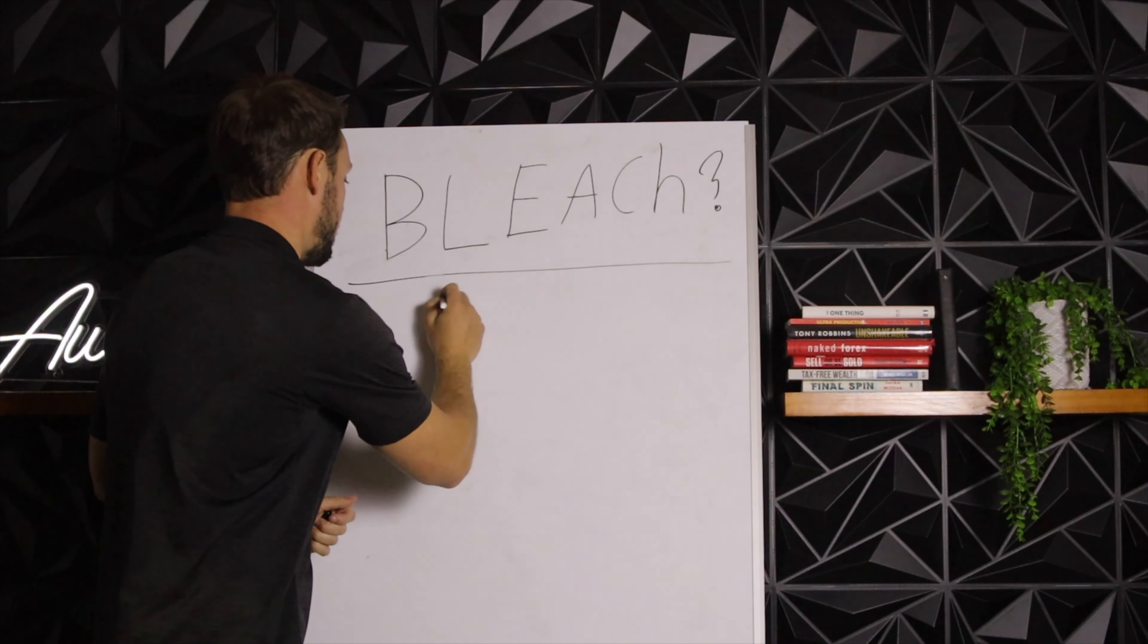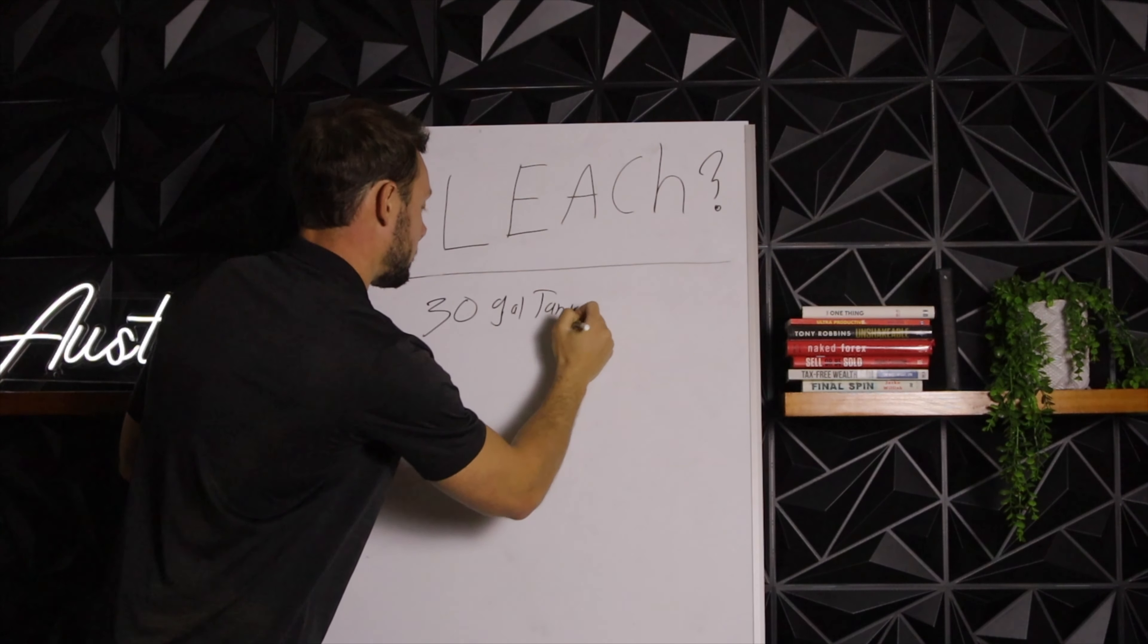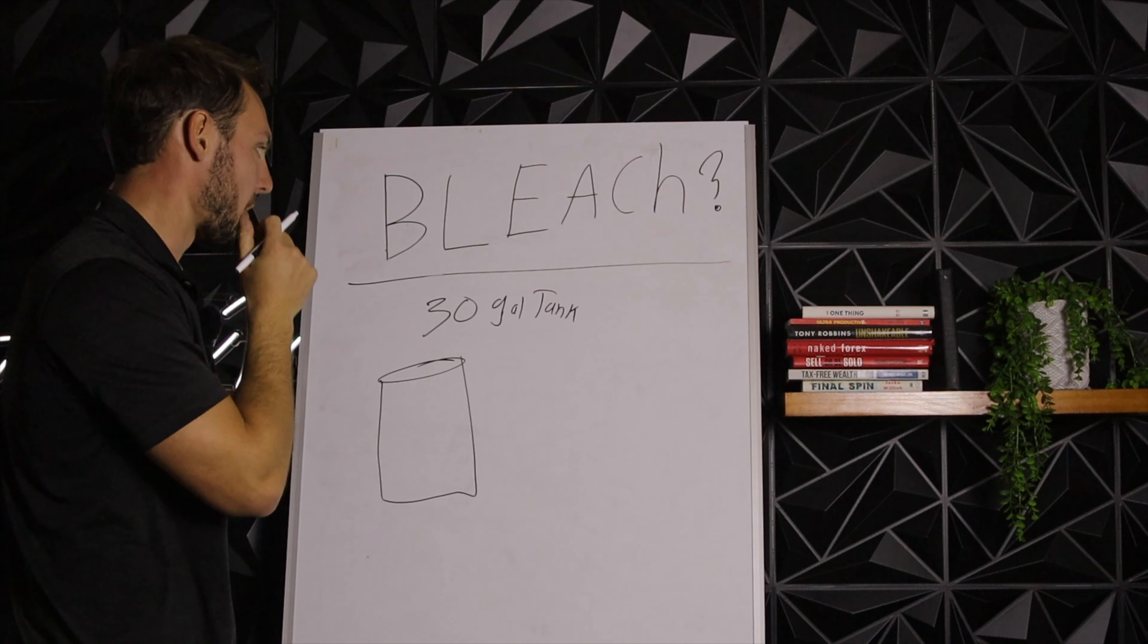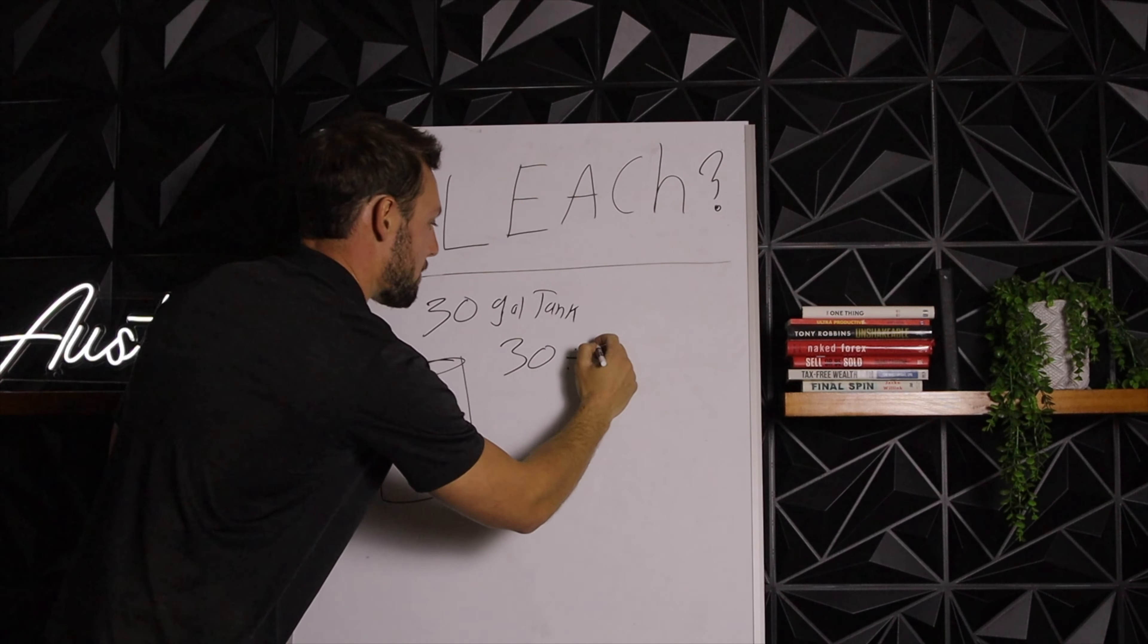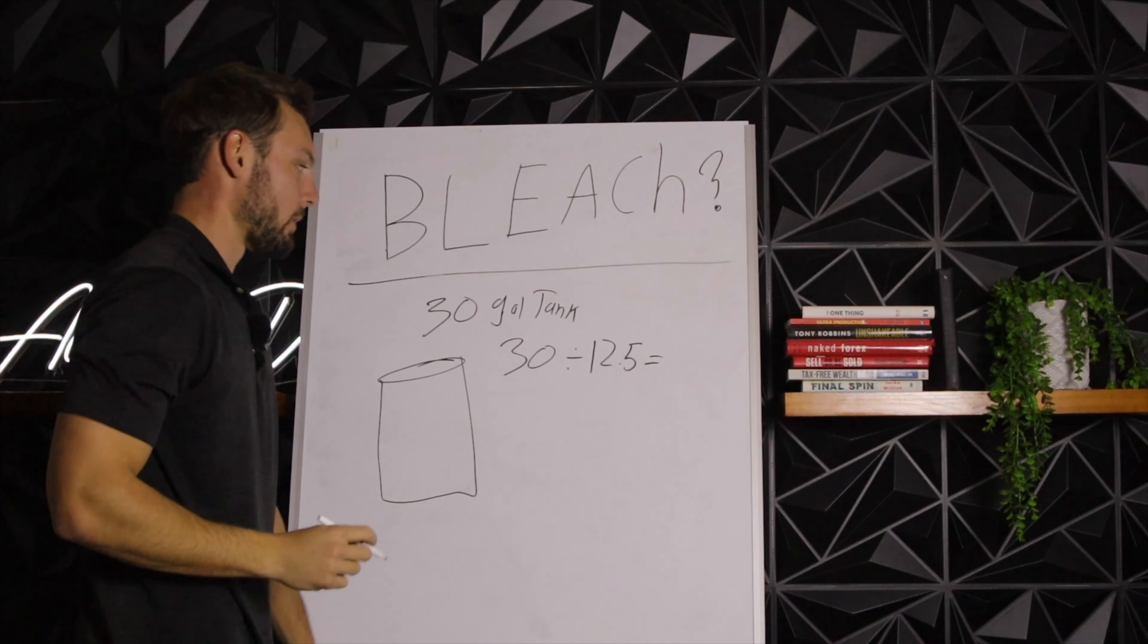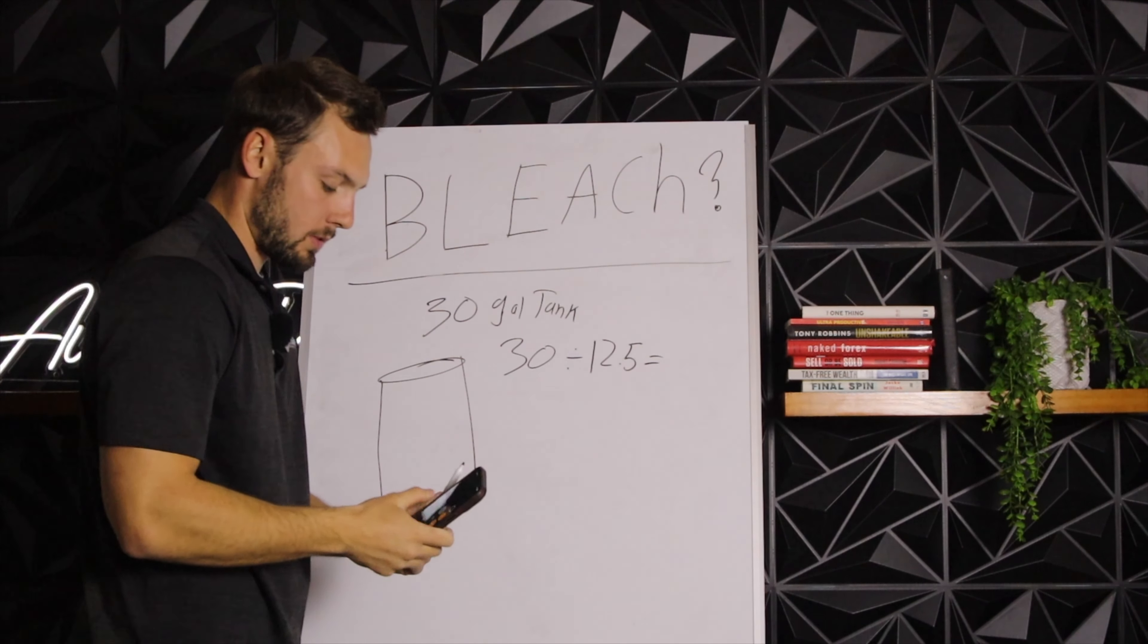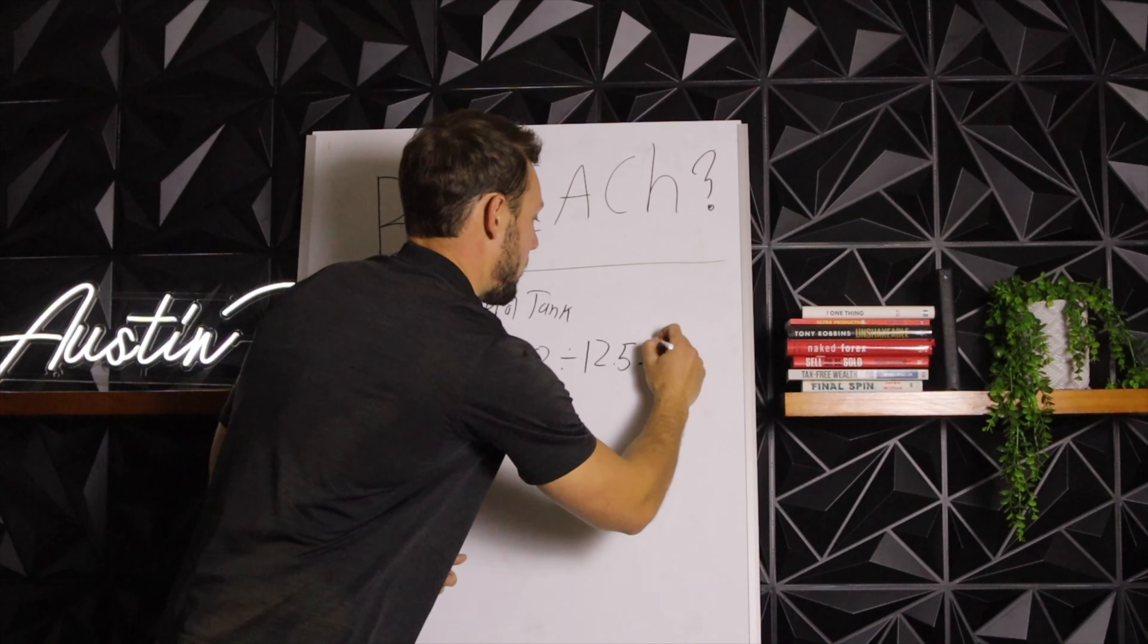We're using a 30 gallon tank. This is our 30 gallon tank. We're going to take 30 gallons and we're going to divide that by our bleach, the strength at which we get bleach at. So 30 gallon tank divided by 12.5. 30 gallons divided by 12.5, that's going to give us 2.4.